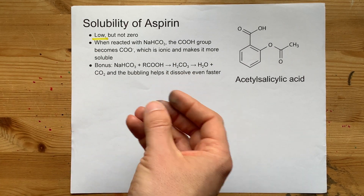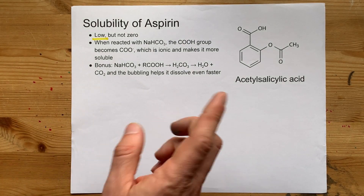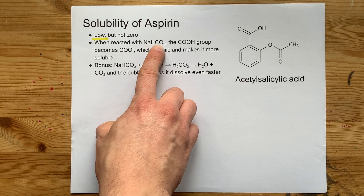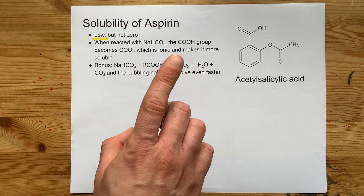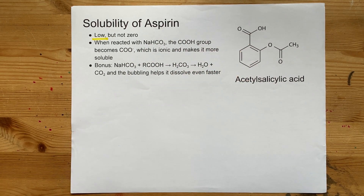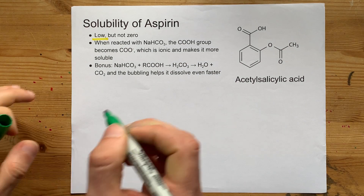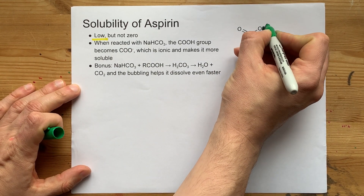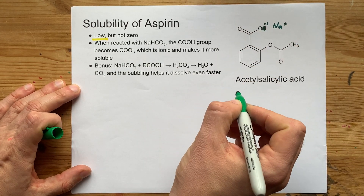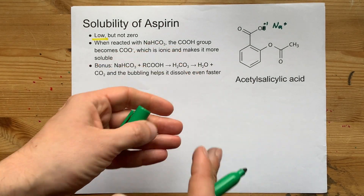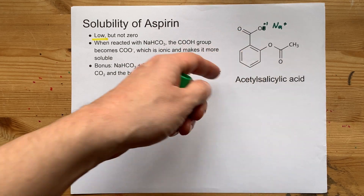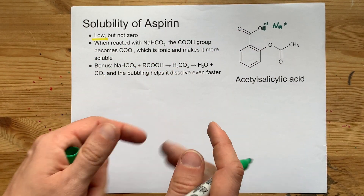So what makes it so you can take a pill of aspirin? The answer is that you can react this with a base like NaHCO3. What that does is it reacts with the carboxylic acid group here. You end up with the same molecule, but with a minus one on the oxygen and a Na+ as a counter ion. Now, you might recognize that all salts of sodium are soluble, and so now this ion is polar enough to dissolve in water.